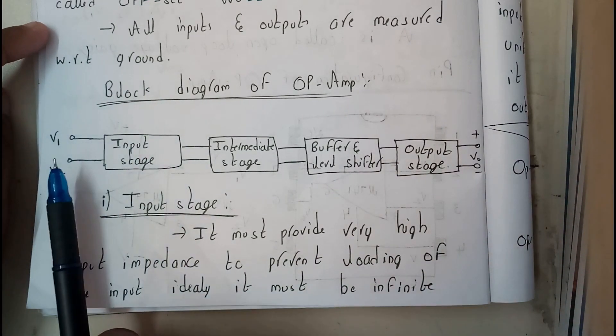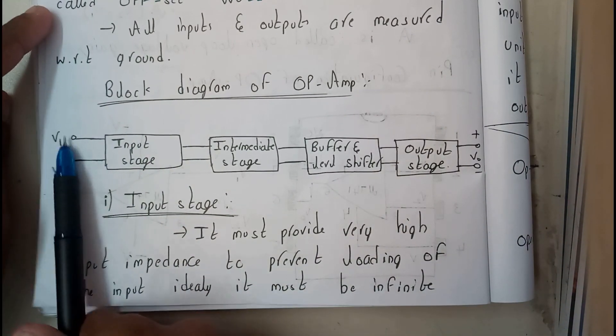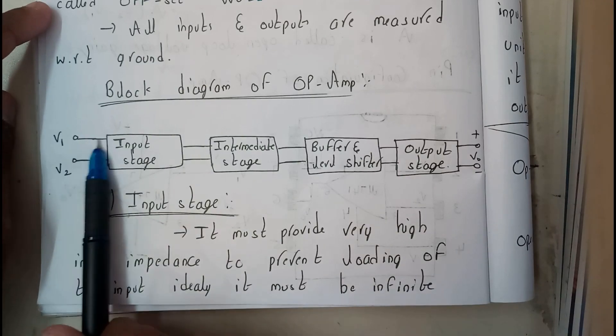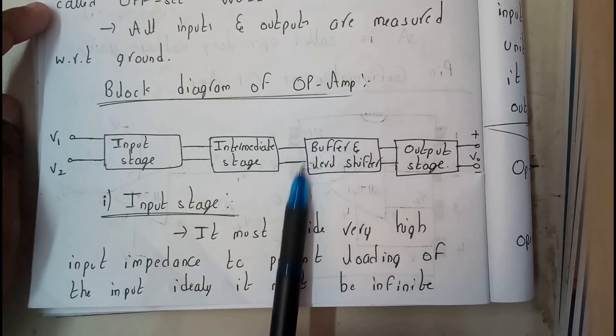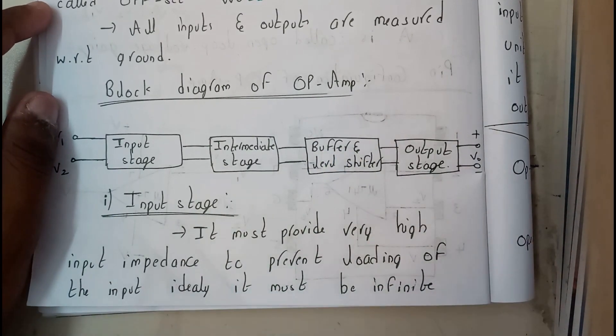So basically the block diagram is like this: initially the inverting and non-inverting terminals, input terminals, are given to the input stage, then to the intermediate, that forwards to the buffer stage, that forwards to the output stage.